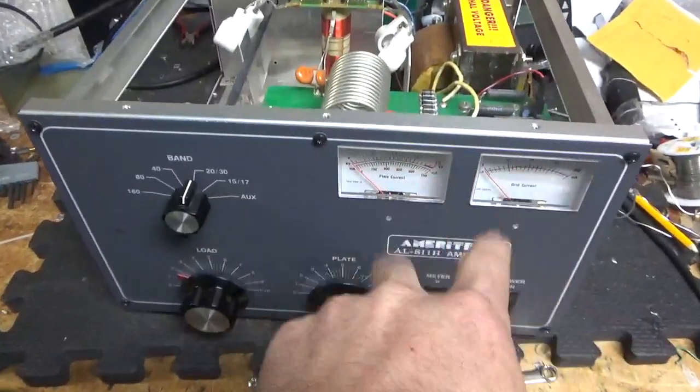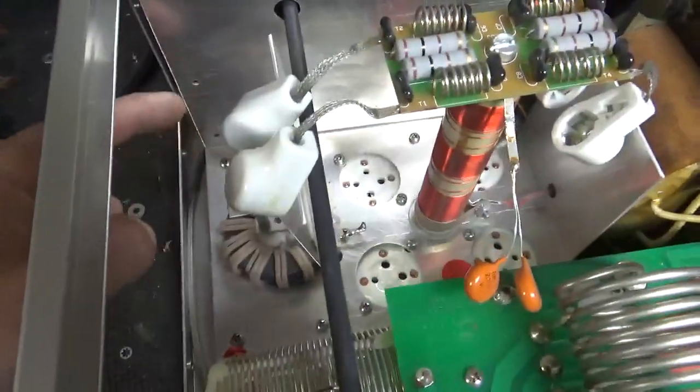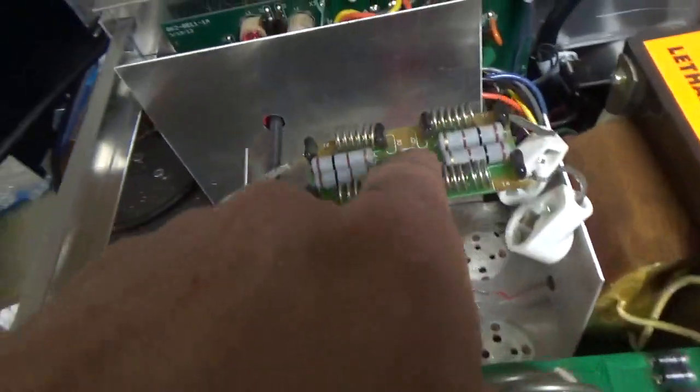Needs meter lamps, so I'll buy new LEDs, put those in, change the resistor. I'll ground the grids directly to the metal, put the gas discharge tubes at the base of the sockets, put the right screw in.